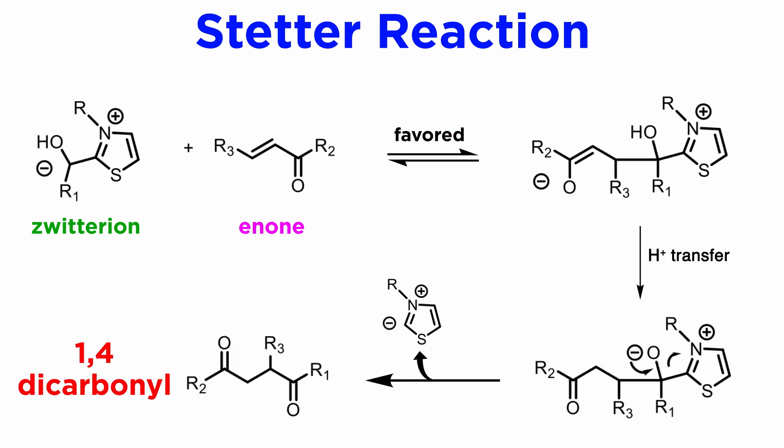And so, this is a very nice way to form 1,4-dicarbonyls. No synthetic equivalents are needed, and the aldehyde is turned into a nucleophile by the action of small amounts of a catalyst. Pretty clever stuff.